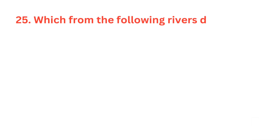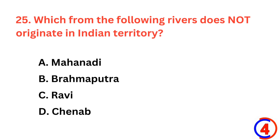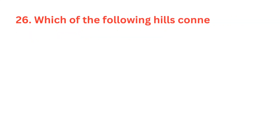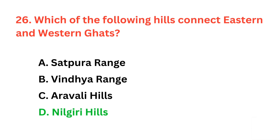Which from the following rivers does not originate in Indian territory? The correct answer is option B, Brahmaputra. Which of the following hills connect eastern and western Ghats? The correct answer is option D, Nilgiri Hills.